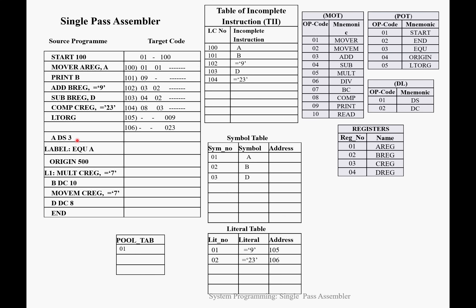Next is DS 3 (declarative storage). Using DS and DC we assign addresses to symbols. For symbol A, we assign address 107. The target code at 107 is dash dash 003.